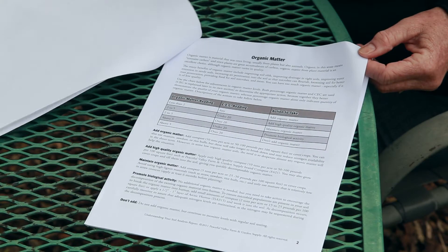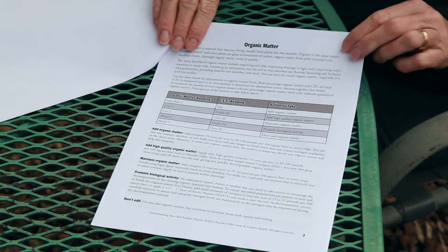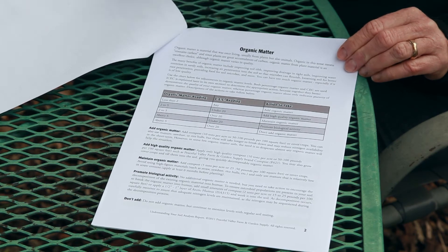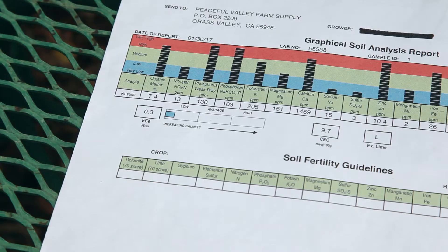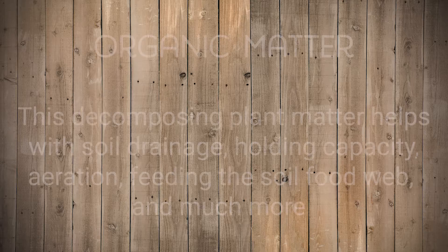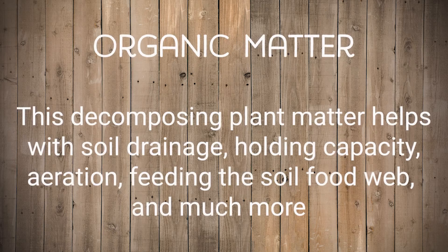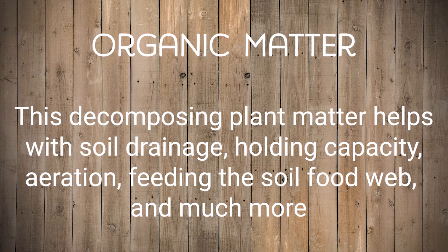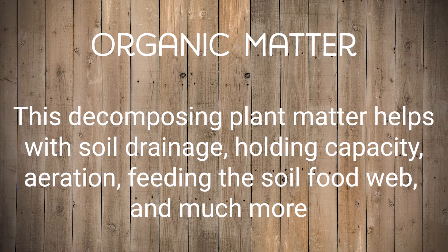The first part of the results you'll look at is the organic matter percent. Organic matter usually comes from decomposing plant matter and helps with soil drainage and holding capacity, aeration, feeding the soil food web, and more.